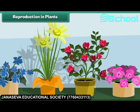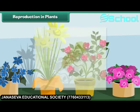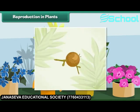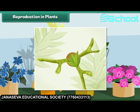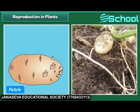Plants reproduce in different ways. Most of the flowering plants produce seeds. Some plants do not produce seeds; they produce spores which can grow into a new plant.